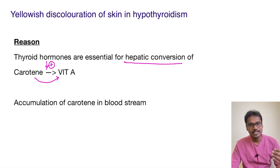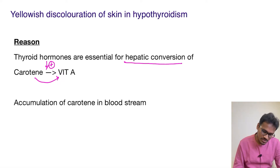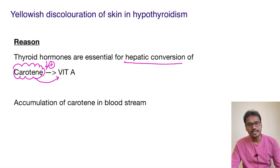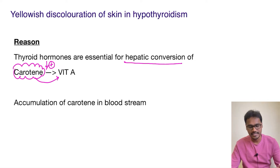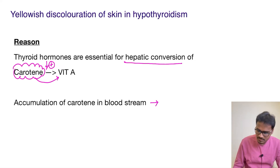Since thyroid hormone levels are reduced, carotene levels in the blood start to accumulate and increase. This accumulation of carotene in the bloodstream is called carotenemia.